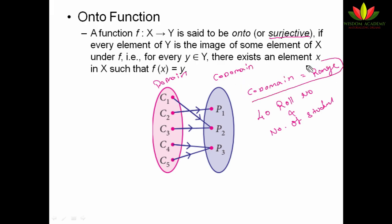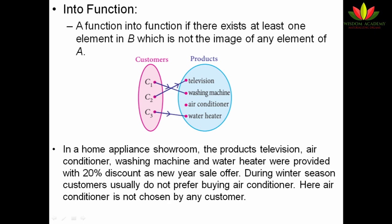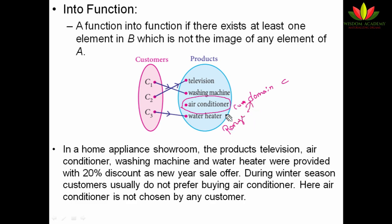In onto function, my co-domain and range elements are equal. Next, we have into function, which is the opposite of onto function — here some co-domain elements remain unassociated. For example, three customers come to a showroom and buy a TV, washing machine, and water heater, but nobody selects the air conditioner because it is winter. So the air conditioner is left unassociated. This means one product is not mapped to any customer, so this is called an into function — some extra elements exist in the co-domain with no association.